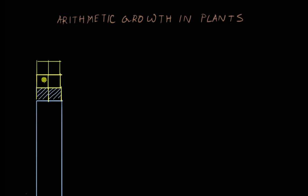Now these two cells again stop dividing, and the top two cells divide again. This goes on and on. So if you notice, every time the cells divide, two new cells are added.